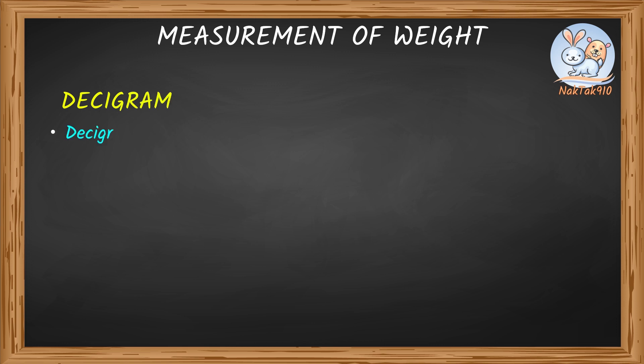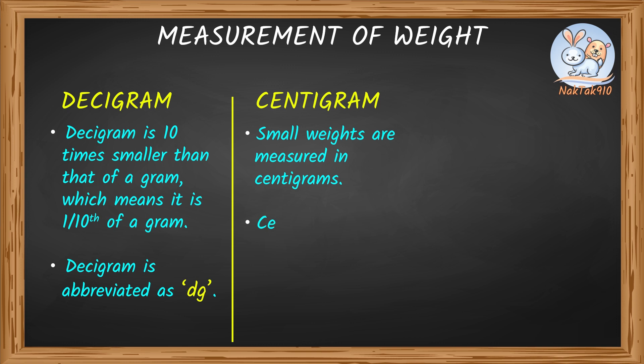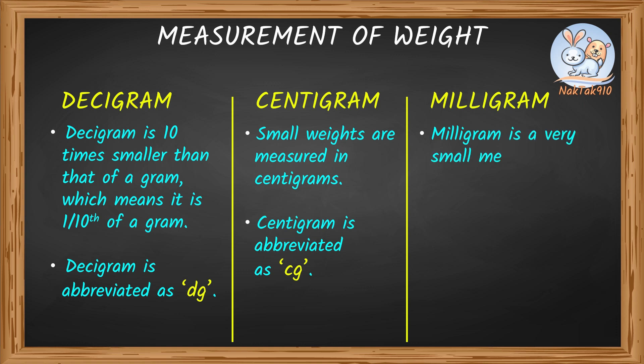Decigram. Decigram is 10 times smaller than that of a gram, which means it's one-tenth of a gram. Decigram is abbreviated as dg. Centigram. Small weights are measured in centigrams. Centigram is abbreviated as cg. Milligram. Milligram is a very small measurement. One milligram is equal to about one in one thousand of a gram.